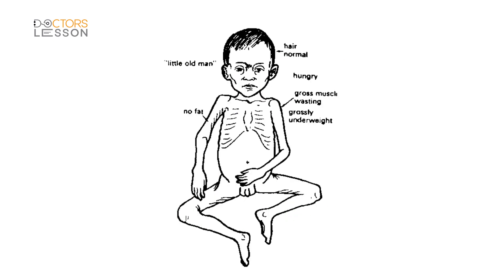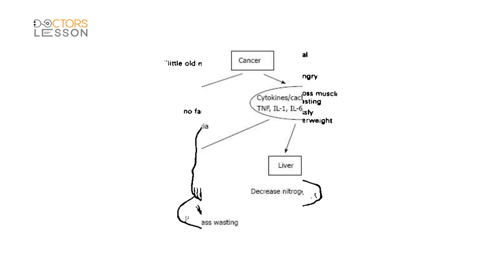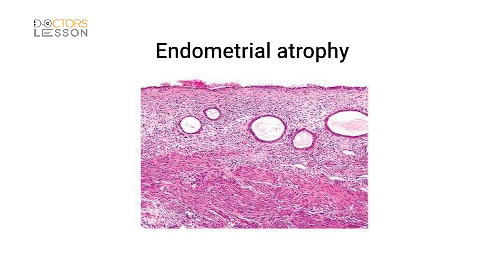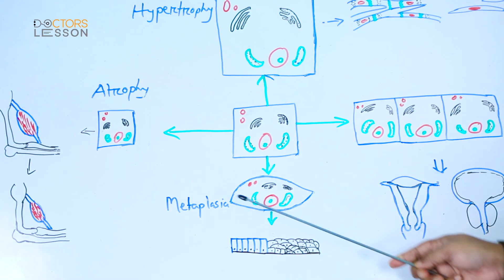Inadequate nutrition causes muscle atrophy, as seen in protein-energy malnutrition, especially in marasmus patients. Skeletal muscle atrophy is also caused by increased utilization of muscle protein during inflammation or malignant conditions, where various cytokines such as tumor necrosis factor and interleukin-6 are released, causing increased degradation of skeletal muscle protein and leading to cachexia in these patients. Decreased hormonal stimulation causes atrophy of the endometrium, vaginal epithelium, and breast after menopause.